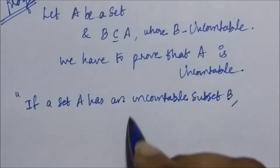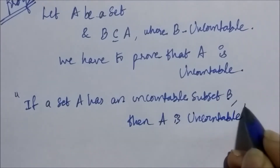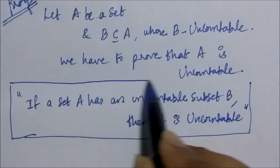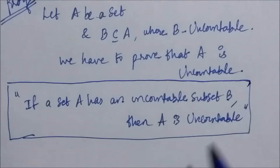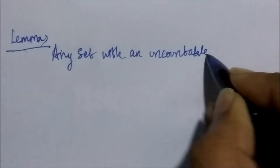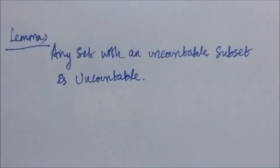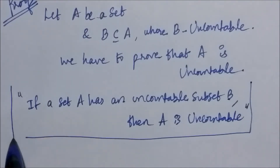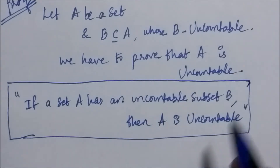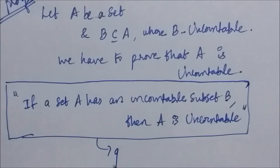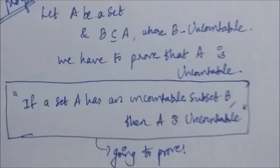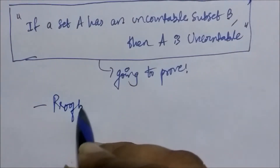If a set A has an uncountable subset B, then A is uncountable. We have to prove this, and then using universal generalization we can conclude that any set with an uncountable subset is uncountable. We are going to prove this using the proof by contradiction method.